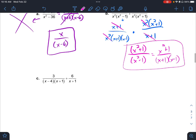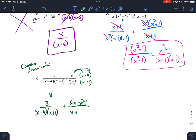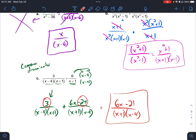And the last one, adding or subtracting. We need that common denominator. So when I have that, I have x minus 4 x plus 1. Over here, I only have the x plus 1. So I need to multiply by the x minus 4 on top and bottom. First one is going to stay the same. 3 over x minus 4 x plus 1 plus, I'm going to distribute this right away. I have 6x minus 24 over x plus 1 x minus 4. Now we're combining like terms. So I can combine my positive 3 and negative 24. I get 6x minus 21 over x plus 1 x minus 4.